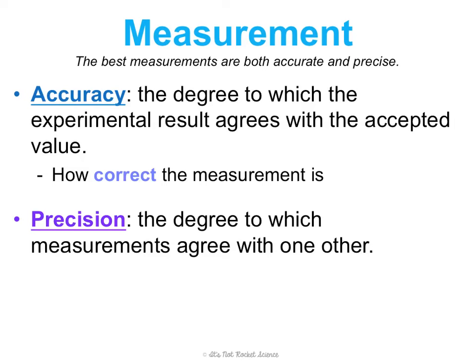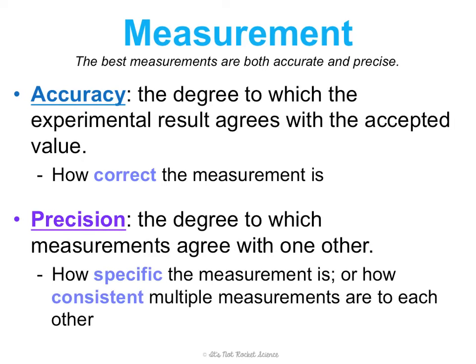Precision is the degree to which measurements agree with one another. So we're looking at whether, if you make multiple measurements over and over — or you and your lab group do — you're consistently getting the same measurements. Precise can also refer to how specific the measurement is. A measurement of 60.25 milliliters is more precise than just 60 milliliters. Precise measurements would be both specific and consistent if made over and over.